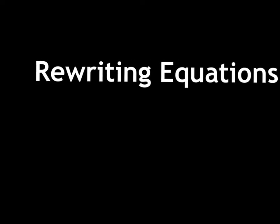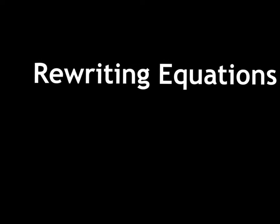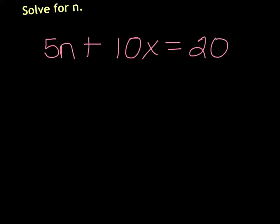This video is going to go through rewriting equations and solving for different variables. Our first problem, just watch this one — you don't need to write it down. This equation says to solve for n. That means we want it to say, when we're done solving it, something like n equals, and then a bunch of stuff.